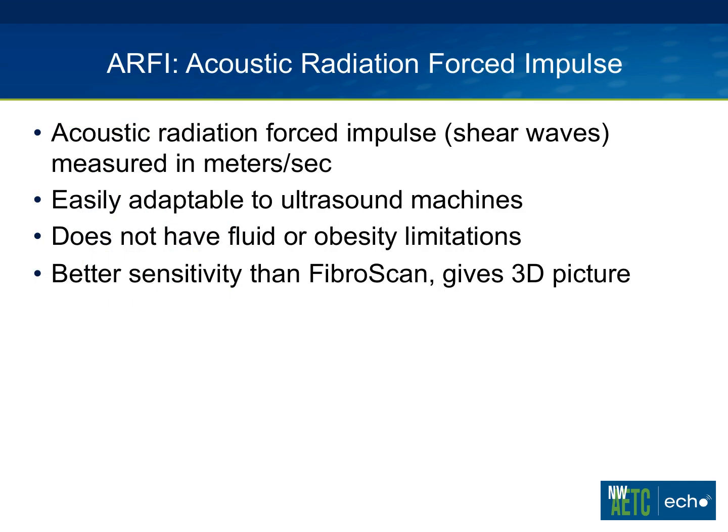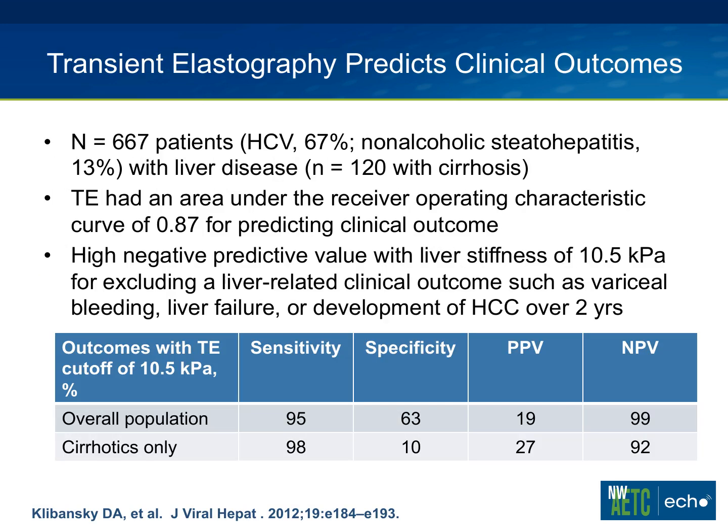We've been using a similar technology locally called acoustic radiation force impulse (ARFI) — basically ultrasound with a special probe and software. We like it because it has applications beyond liver disease: radiologists use it for breast disease and thyroid. It also provides a 3D picture, and we believe it's more sensitive than the FibroScan, with data to back that up. We've had it for about three months, so there's still a learning curve — my personal observation is it may be underscoring some fibrosis, so just be aware of that as the techs continue learning.